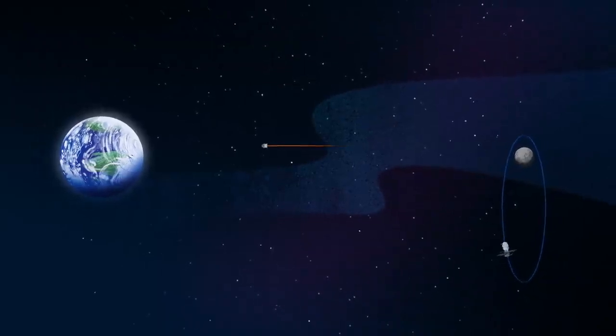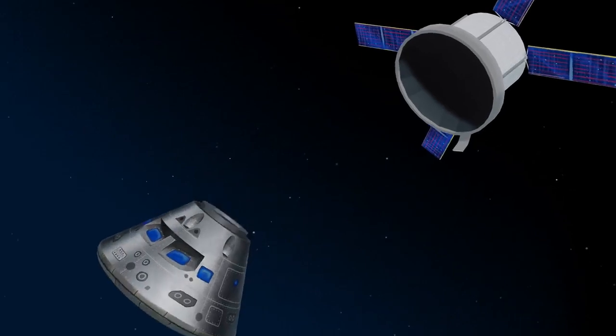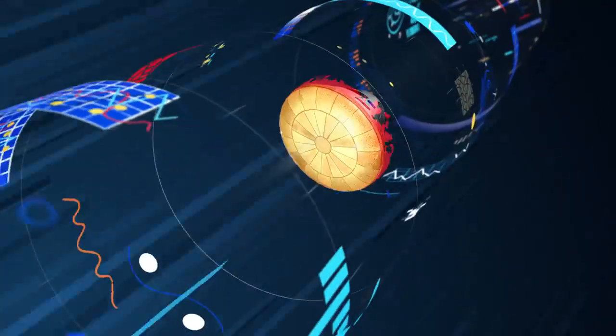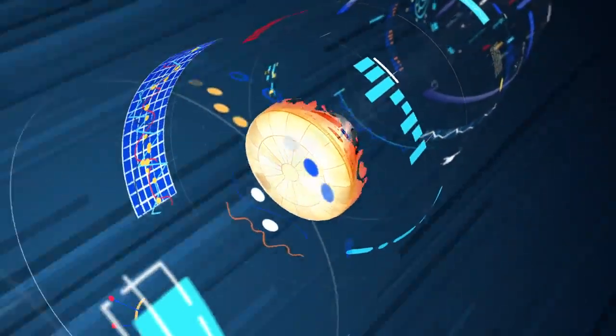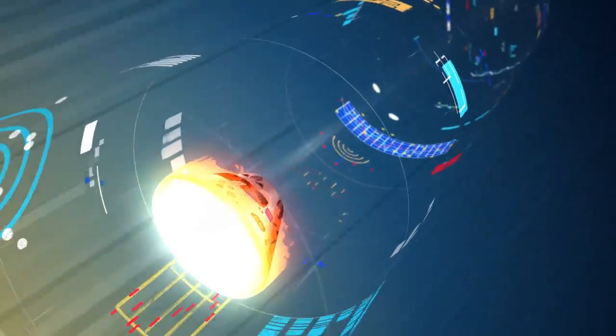As they near the end of this journey, the service module is released, and the crew module is oriented heat shield first. Entering Earth's atmosphere at 25,000 miles per hour, the friction of air slows Orion considerably, while also subjecting it to temperatures of 5,000 degrees.